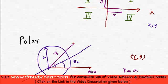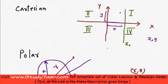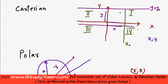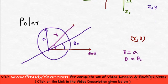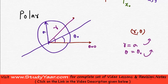Similarly in Cartesian coordinates, x equal to x₀ is a line that is parallel to the y-axis, and y equal to y₀ is a line that is parallel to the x-axis. Over here in polar, r equal to a is a circle, and θ equal to θ₀ is a line.